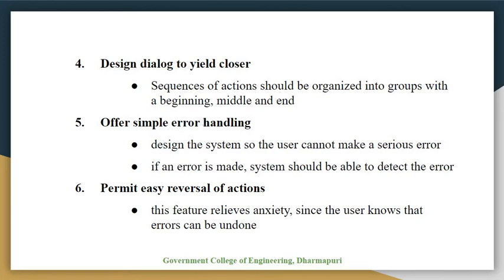The fifth golden rule is to offer simple error handling. As much as possible, design the system so the user cannot make a serious error. If an error is made, the system should be able to detect it and offer a simple, comprehensible mechanism for handling the error.